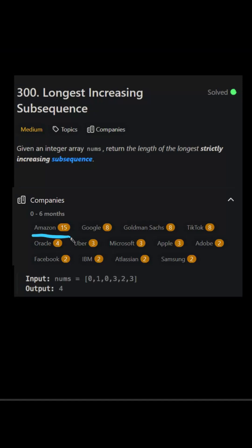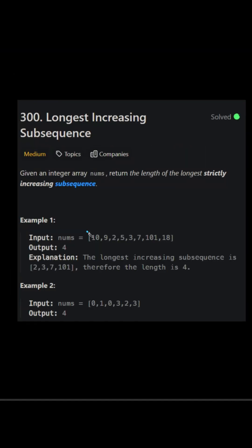Amazon has been asking this question for 15 times over the past 6 months. This is LeetCode longest increasing subsequence. If we have an array like this, the longest increasing subsequence will be 2, 3, 7, and 1.